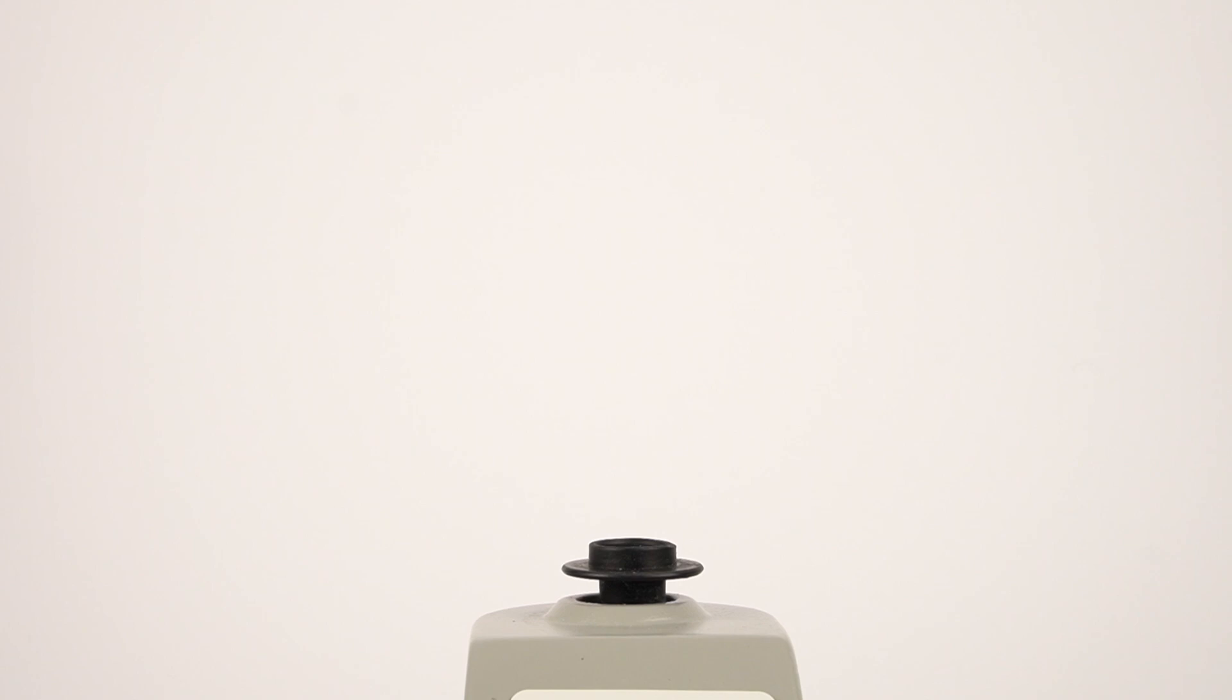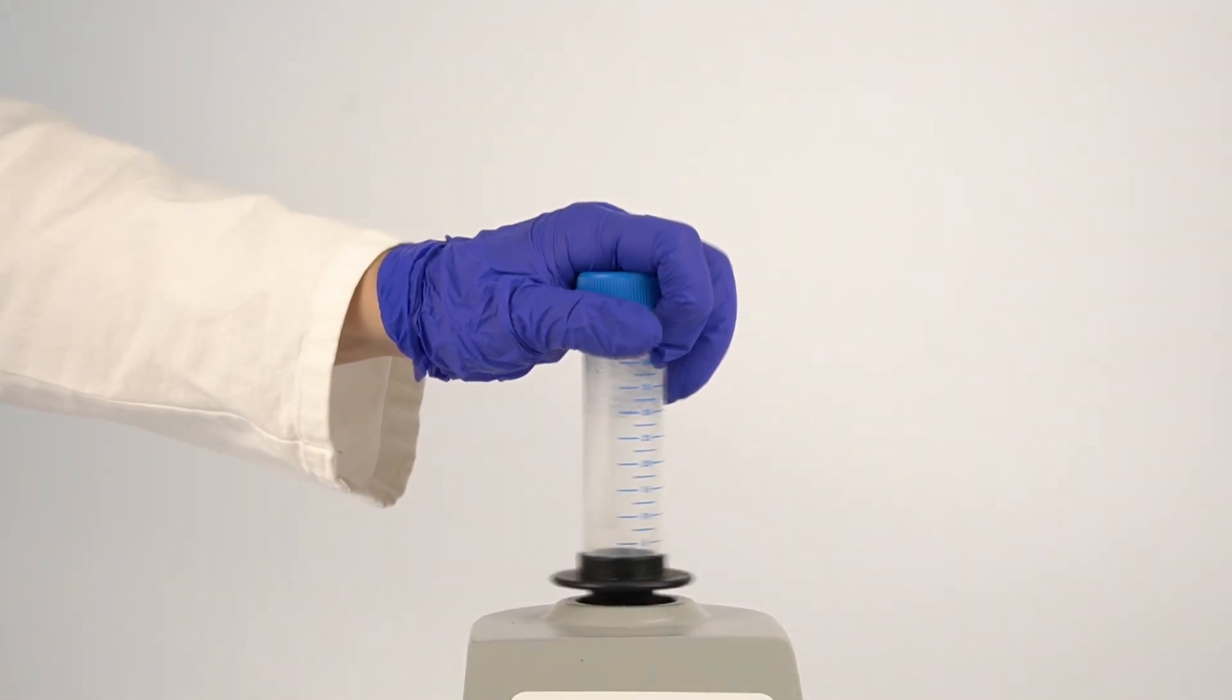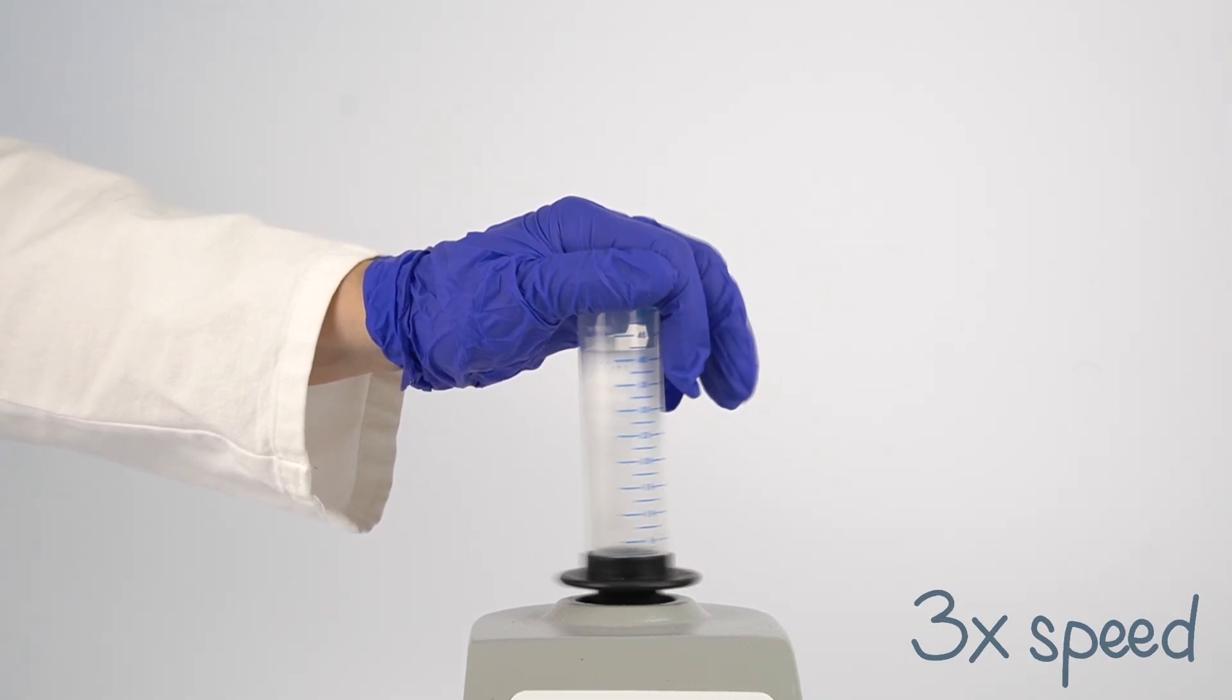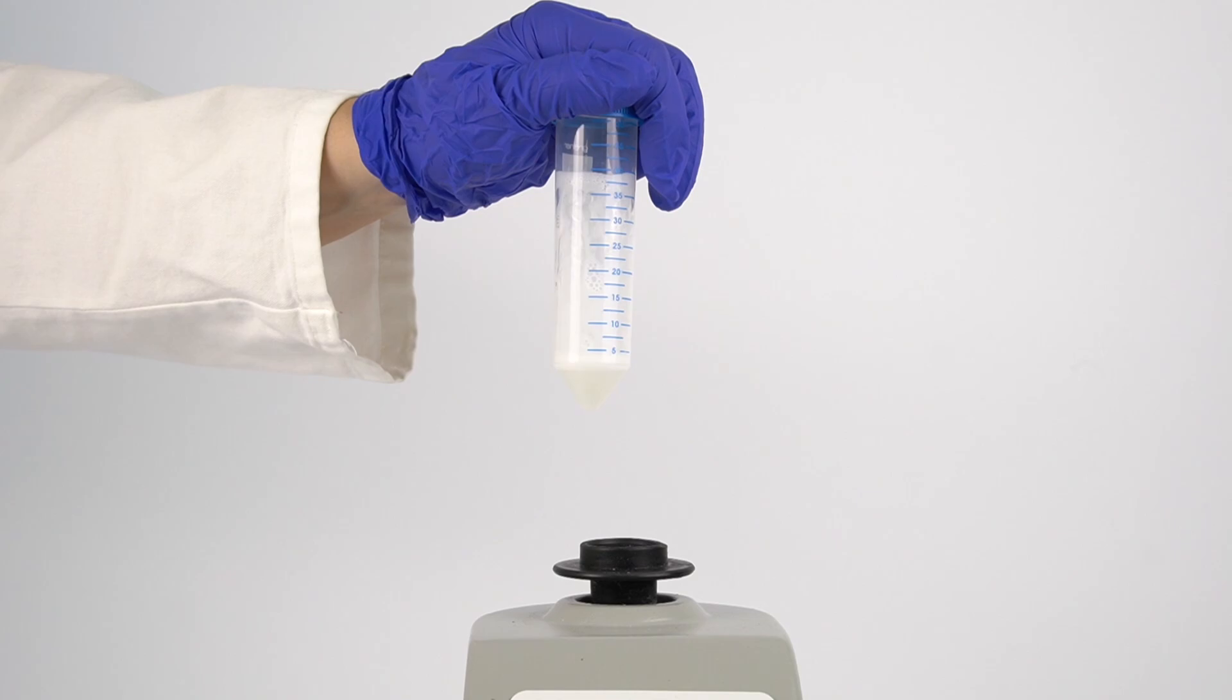To produce the double emulsion, we just have to vortex it again. Thinner oil shells can be obtained by either increasing the vortex speed or the diameter of the centrifuge tube. Both increase the centrifugal forces experienced by the double emulsion droplets.